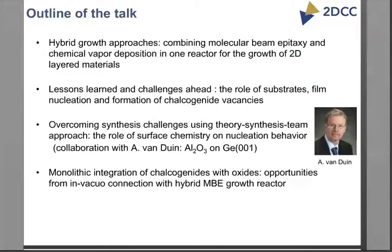I'm going to talk about the green triangle — the hybrid MBE approach — then show a little bit of the lessons that were learned synthesizing those materials and forecasting the challenges ahead. I'm going to cover the role of substrates, issues in film nucleation, and typically the formation of chalcogenide vacancies in these structures. Then I'll show potential ways to overcome some of those challenges using a theory-synthesis team approach, using the example of the nucleation behavior of alumina on germanium 001. At the end, I want to show that we actually have the capabilities within the center to integrate chalcogenides with oxides via an in-vacuo connection of this reactor with an existing MBE epitaxy system.